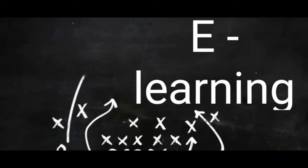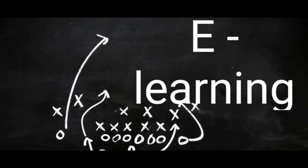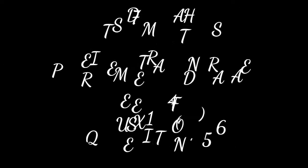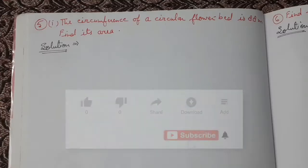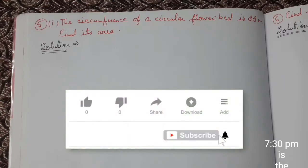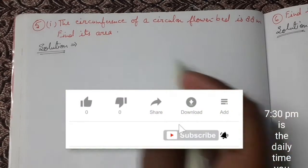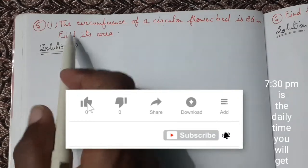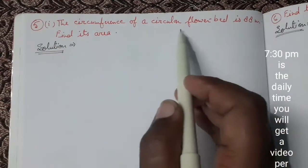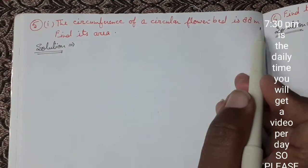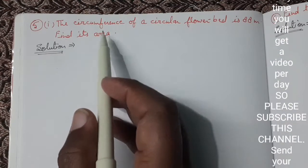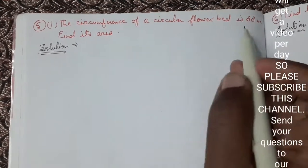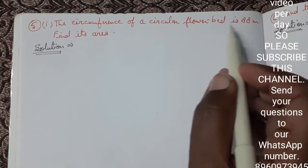Hi everyone, this is Asish and you are watching e-classes by Sit Chute Lal Academy. Now we are going to do question number 5, first part. The circumference of a circular flower bed is 88 meters. Find its area.